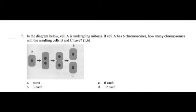In the diagram below, cell A is undergoing mitosis. If cell A has six chromosomes, how many chromosomes will the resulting cells B and C have? A, none. B, three each. C, six each. Or D, 12 each.